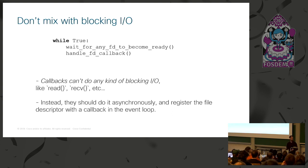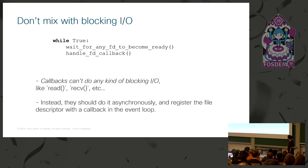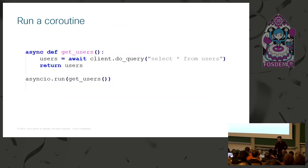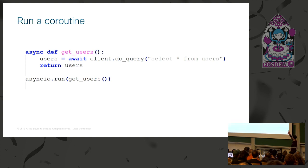We should not do blocking IO; instead we should do non-blocking IO by registering a callback in the event loop, which will execute when a response arrives. Coroutines are a nice abstraction on top of event loops so that you don't have to think about all these callbacks directly, because otherwise you'd end up with very ugly code.